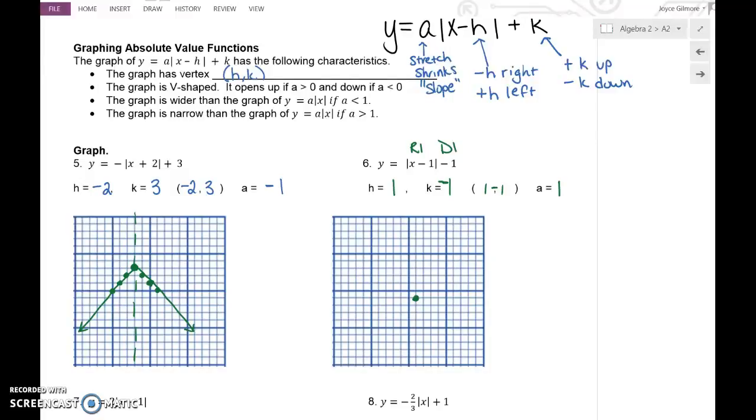So once you have your vertex in there, your a value is 1. So from that vertex, up 1, out 1. And make sure it's symmetrical. Reflect it on the other side. And there's your V-shaped graph.